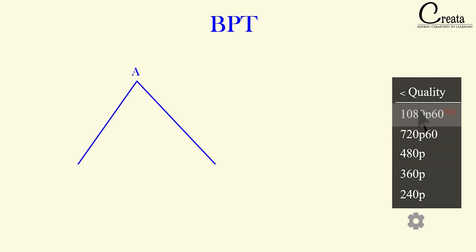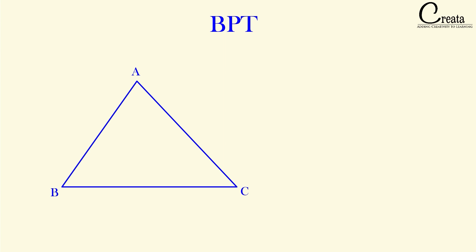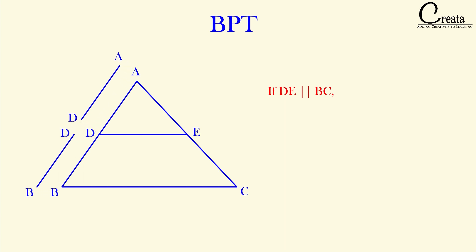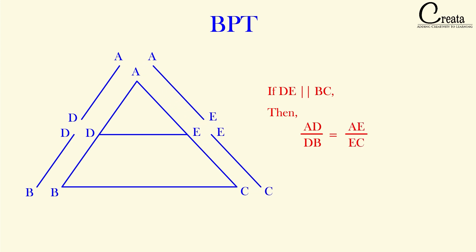Before moving to the questions, let's have a glimpse of the BPT theorem — what the BPT theorem actually states. Consider triangle ABC and draw a line segment DE which is parallel to BC. As per the BPT theorem, if DE is parallel to BC, then the ratio AD upon DB will be equal to AE upon EC.